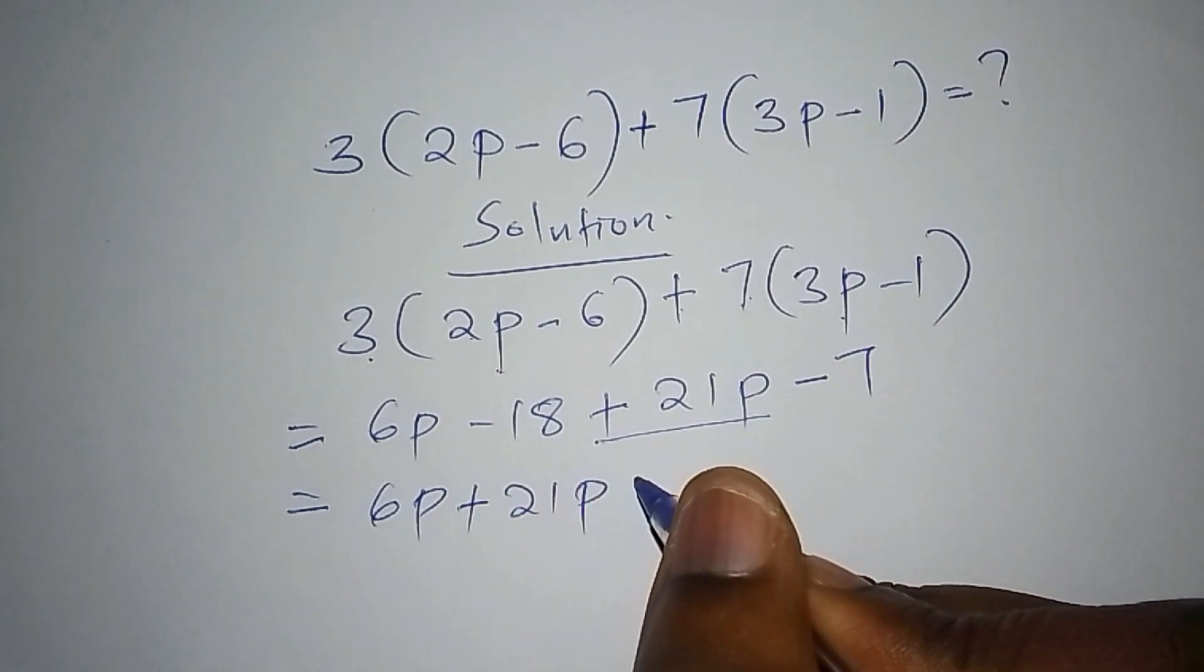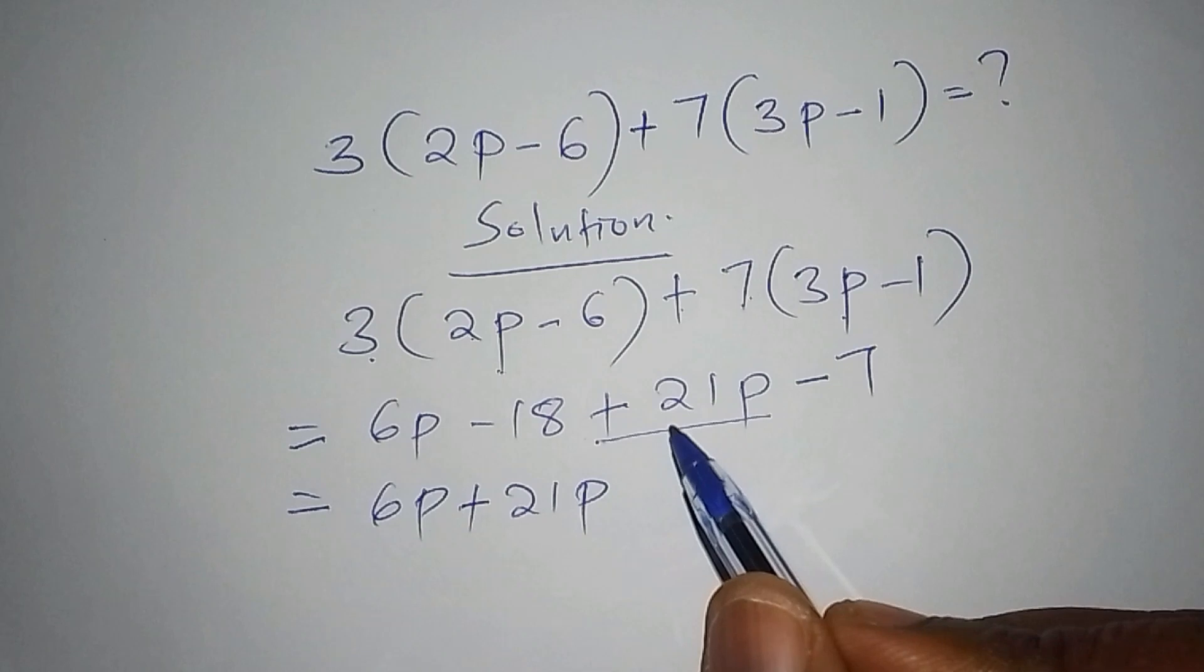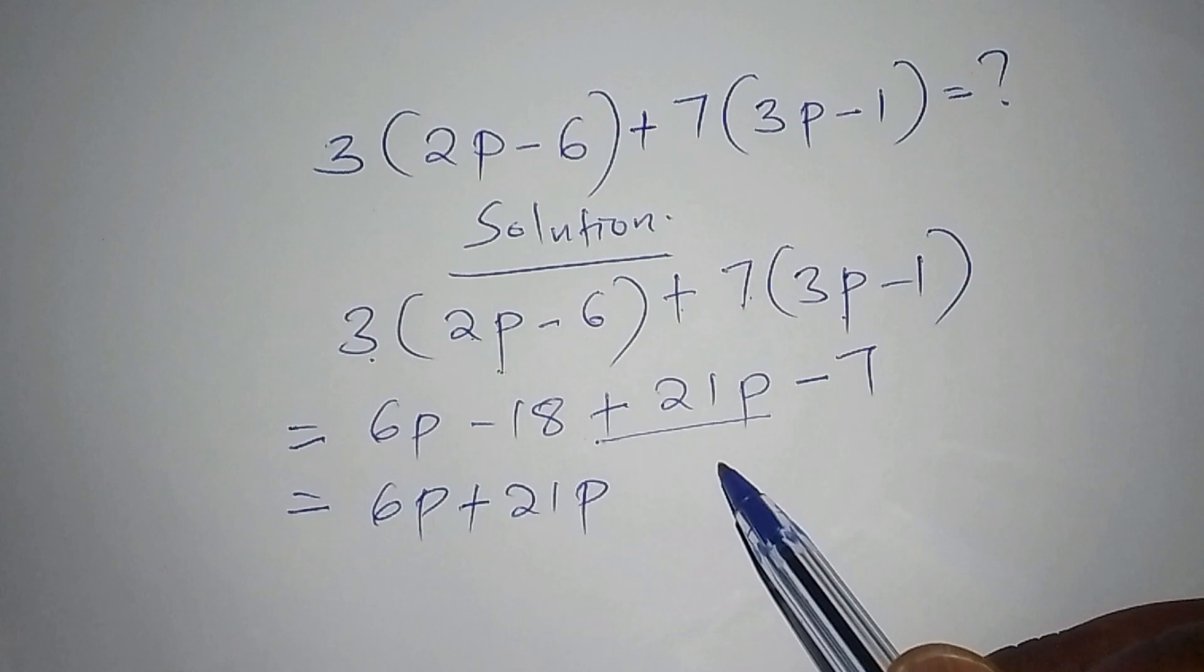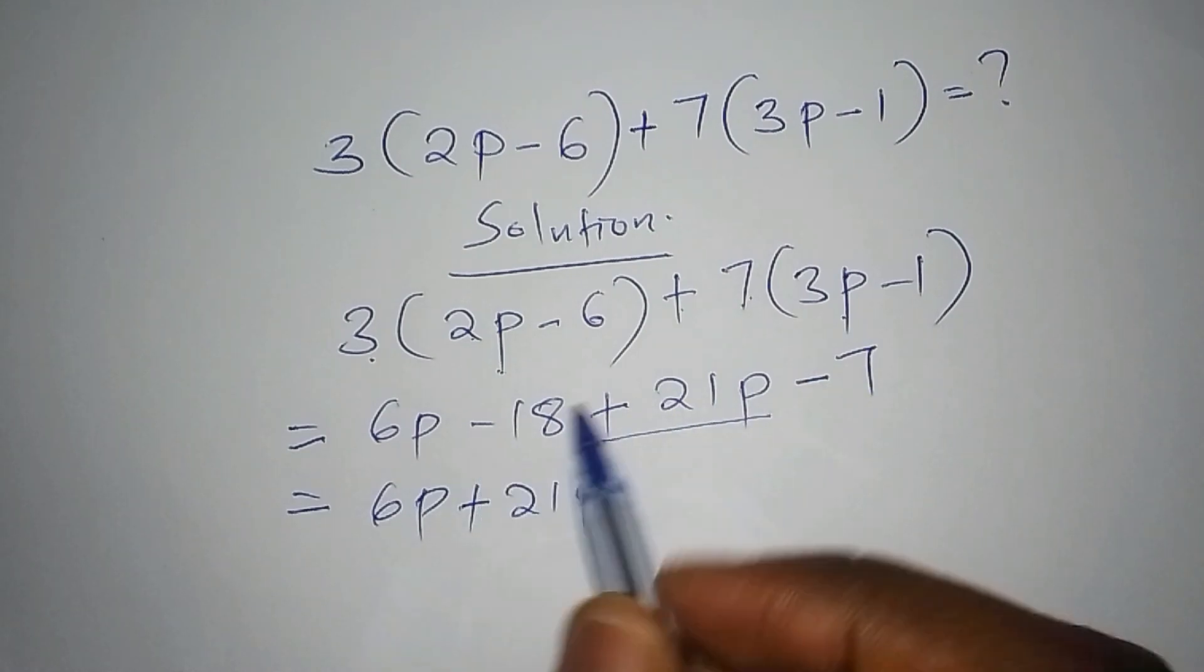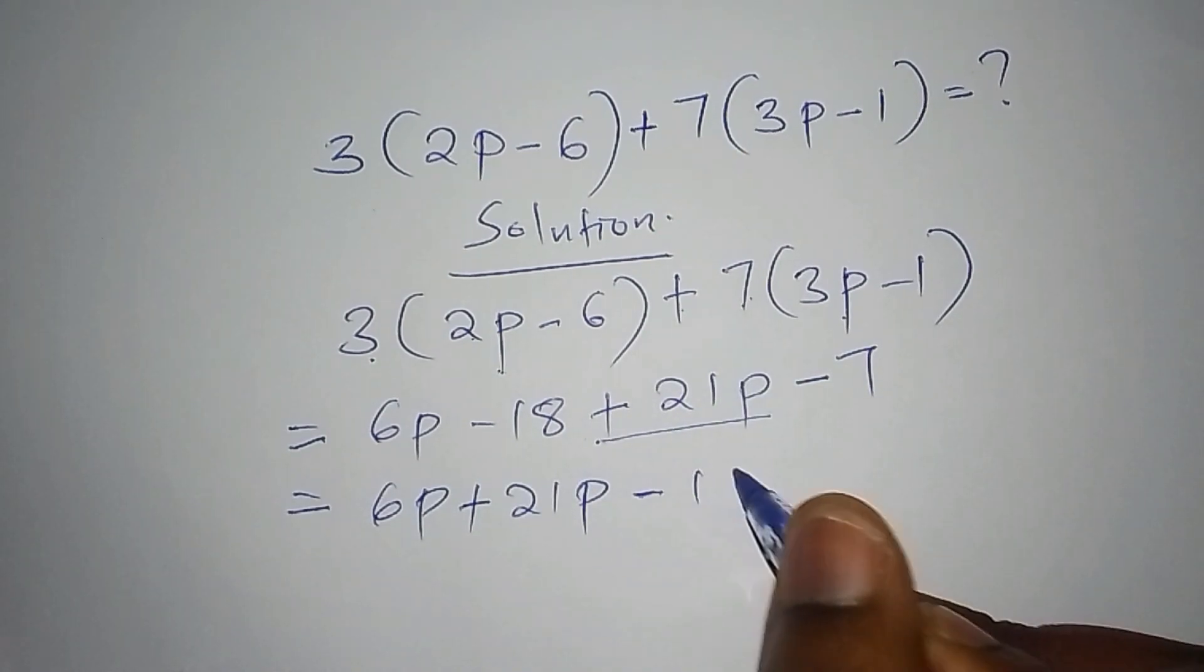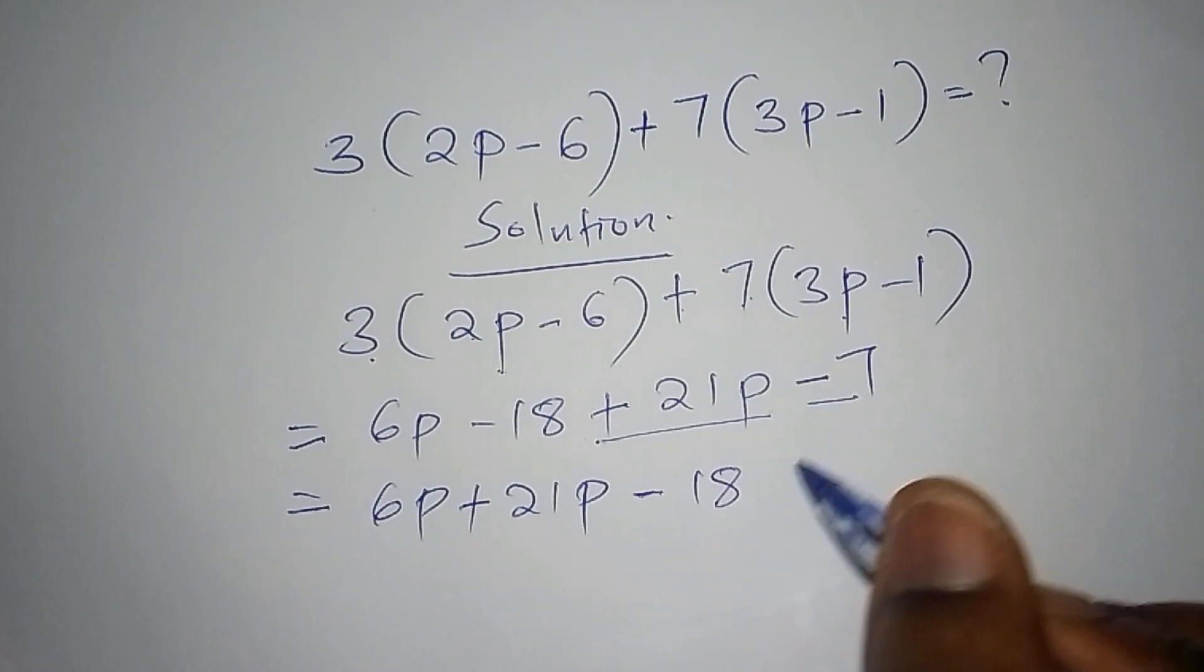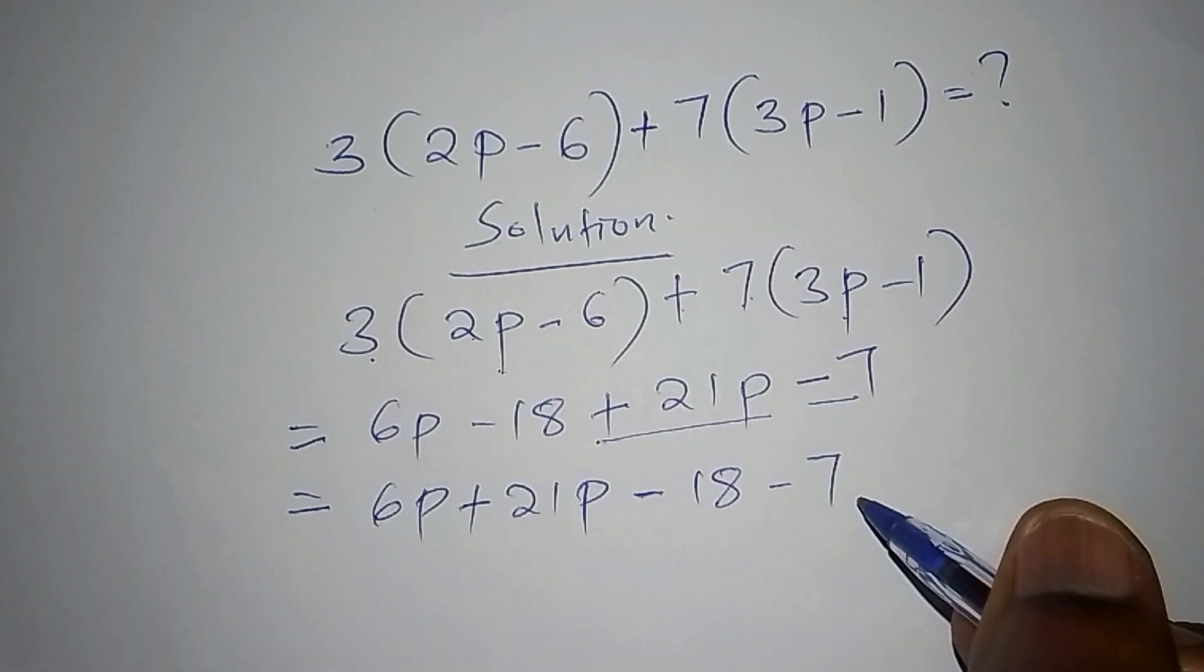Then from there, we shall now have the ones that are the unknowns. Unknowns are the ones that are not p. Here we shall have minus 18, then from there we shall also have minus 7, minus 7.